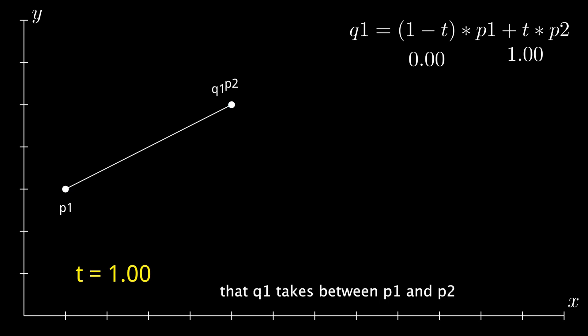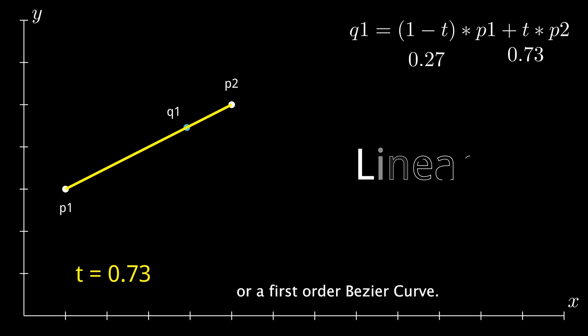And also, the path that Q1 takes between P1 and P2, that is this straight line over here, is what's called a linear or a first-order Bezier curve. I know it looks nothing like what you're familiar with yet, but this was all the math that we needed. All the rest is just pure intuition.